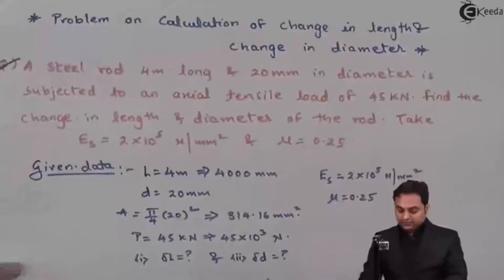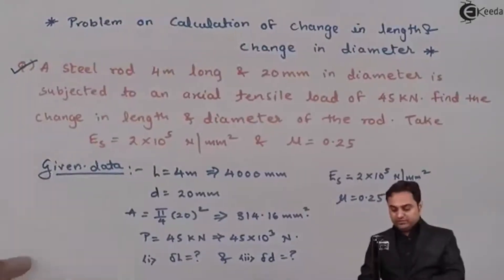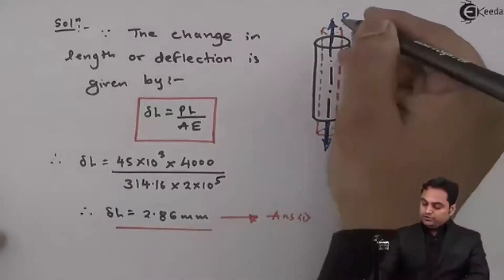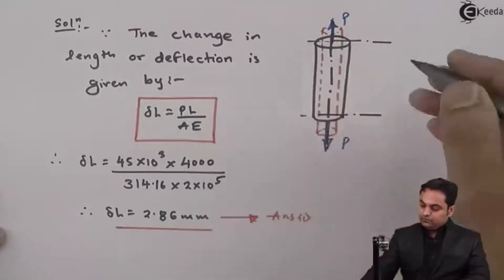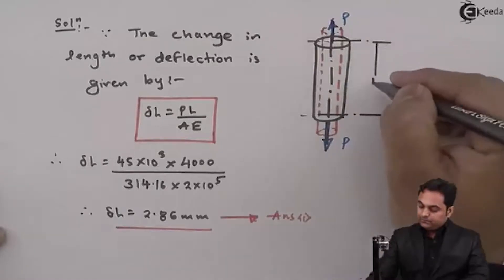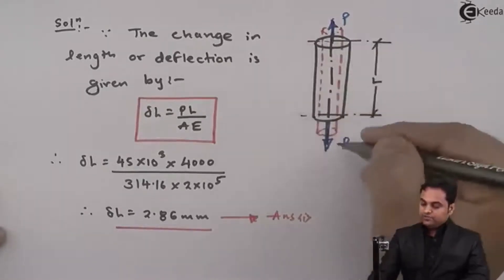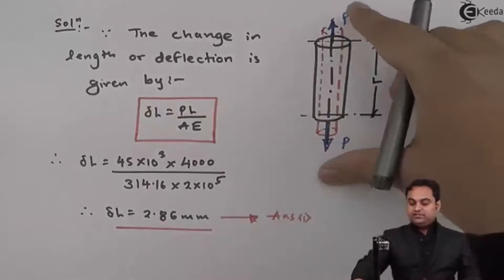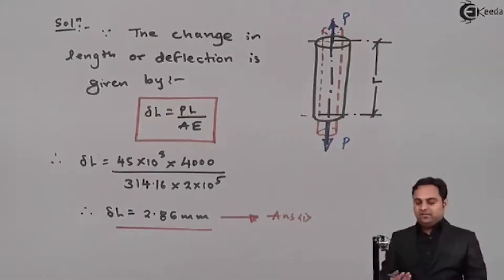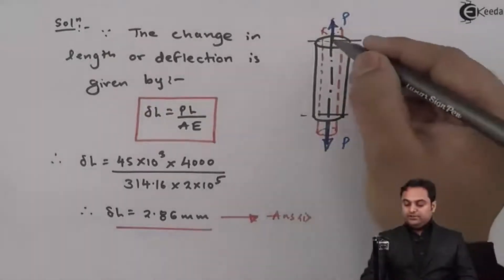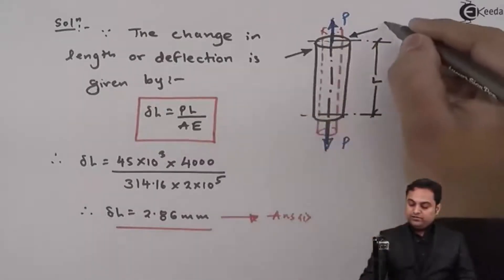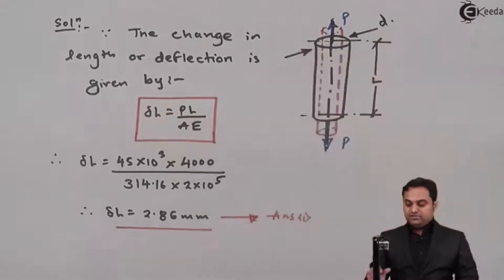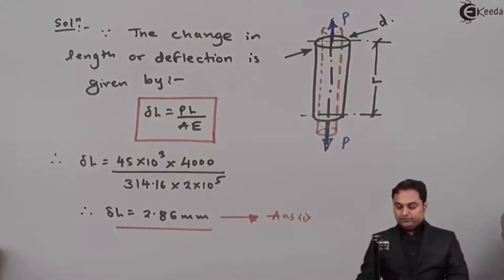The next thing, they are saying to calculate the change in diameter. Now this becomes lateral dimension. How? Because load is parallel to the length. So when load is parallel to length, length will increase, that becomes linear dimension, and load is perpendicular to the diameter. So diameter becomes the lateral dimension. So here we have to find out how much is this change in diameter.